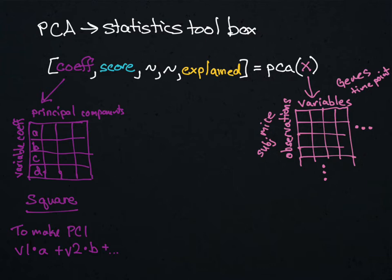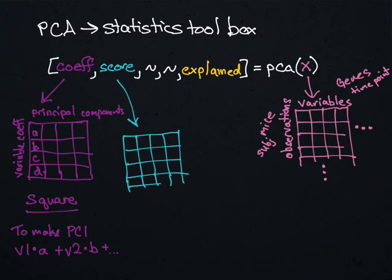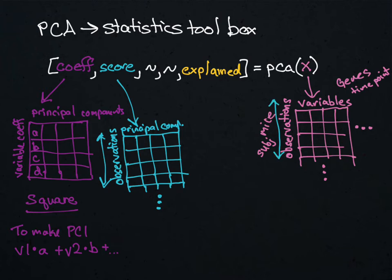The second output is the score matrix. The score matrix has the principal components along the top across the columns, and then the observations in the rows. The dimension along the observations here will be the same as the dimension along the observations in your input. This describes each observation's principal components — when you look at the score plot later on, this is what you use to create it, describing where you plot a particular point in the principal component space.